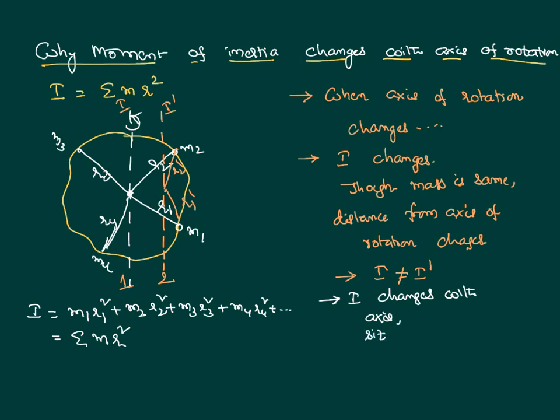It will change with the size of the body. Same mass, but if you have a different size, it will change with the shape of the body. Whenever shape changes, distance of the particles from the axis of rotation change. Automatically, moment of inertia also changes.